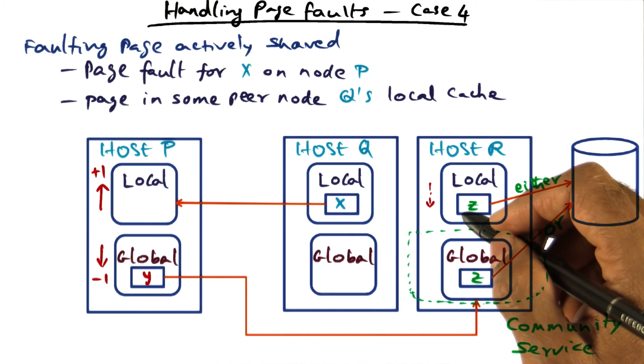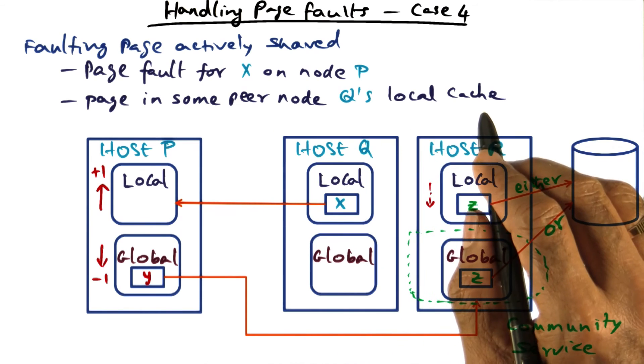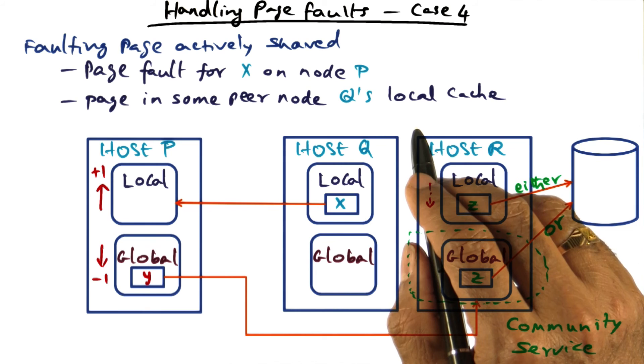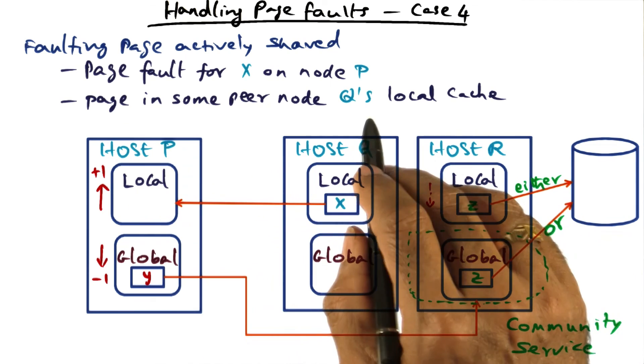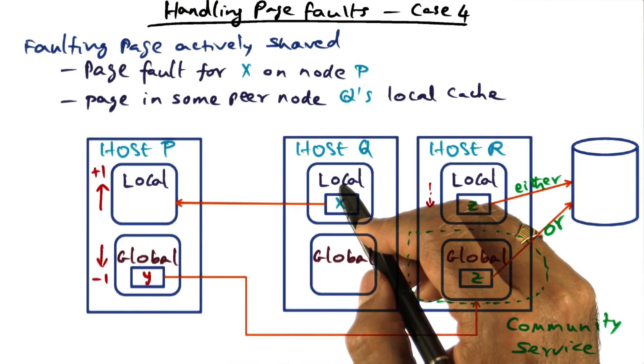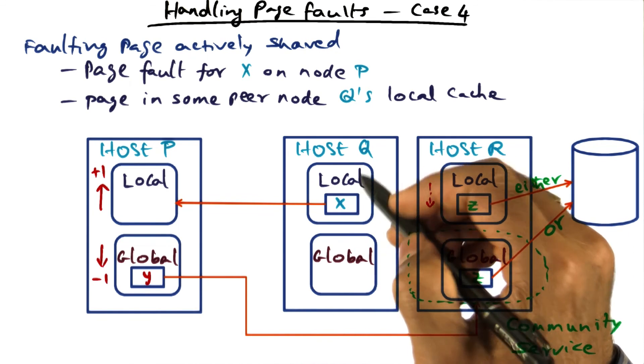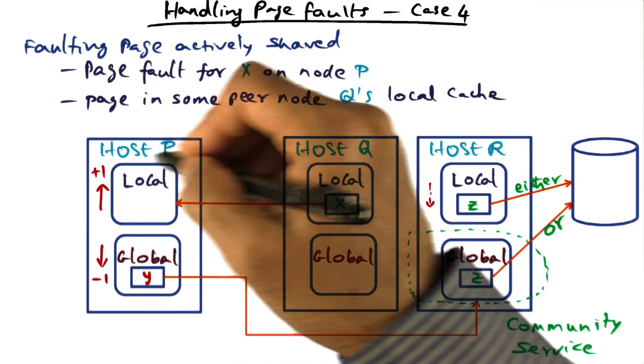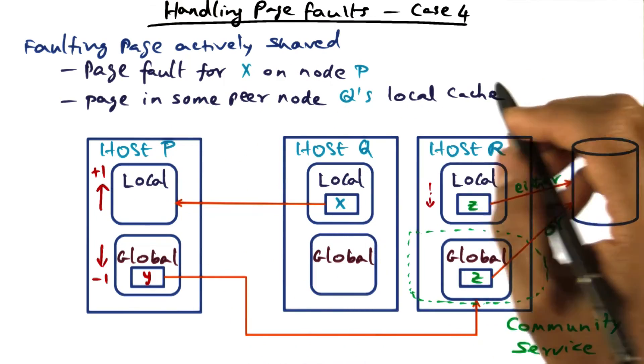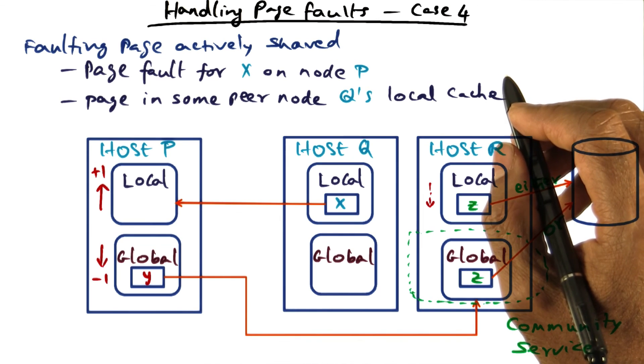I want you to think through all these four cases very carefully. The first three cases that we looked at were cases in which the pages were all private. And this is the only case where the page is potentially shared because it is in the local cache of host Q and in the local cache of host P as well. So now it is time for a quiz.